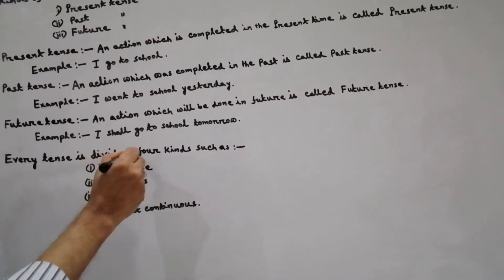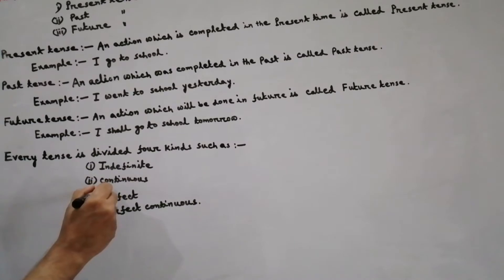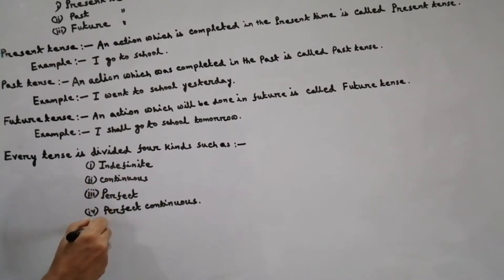Every tense is divided in four kinds, such as indefinite, continuous, perfect and perfect continuous.